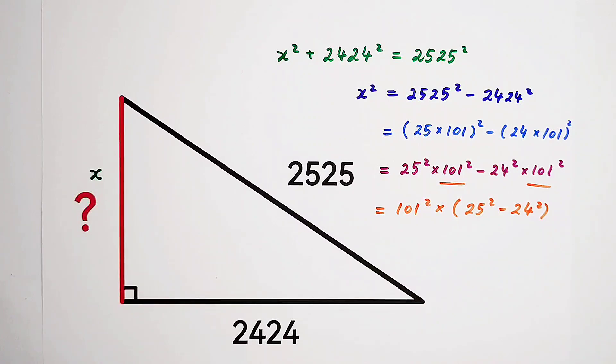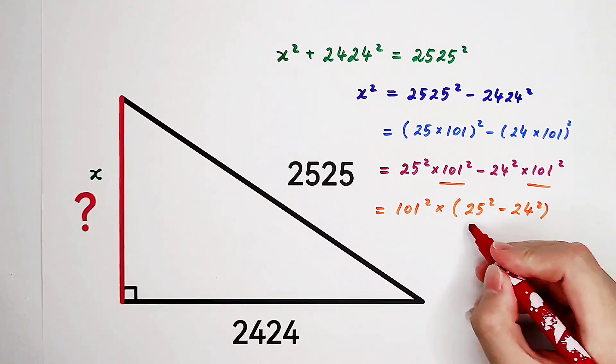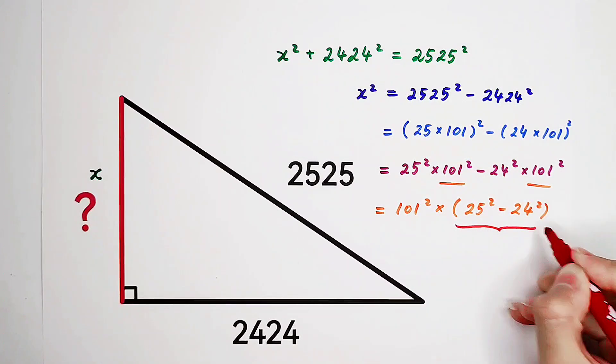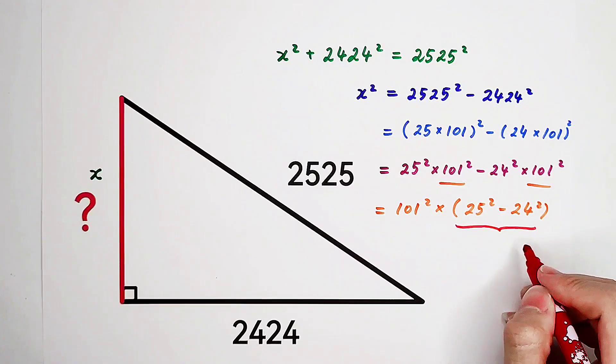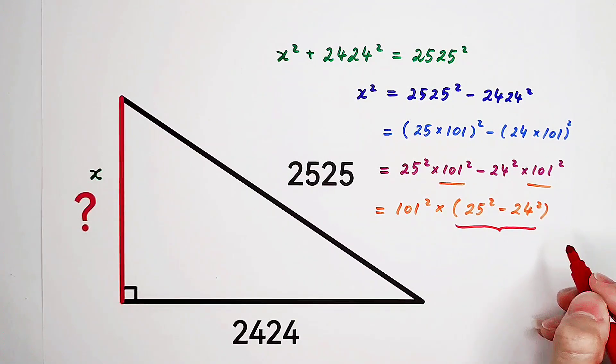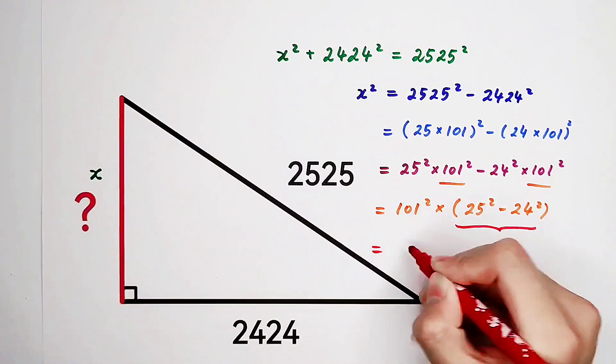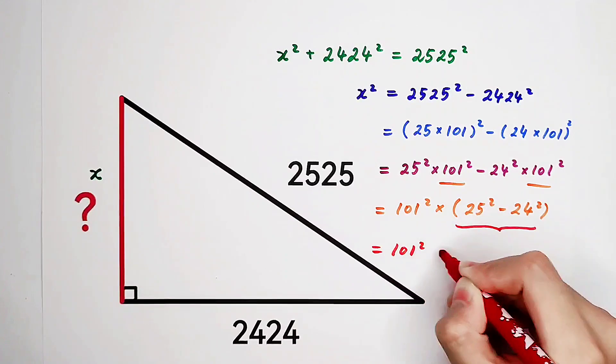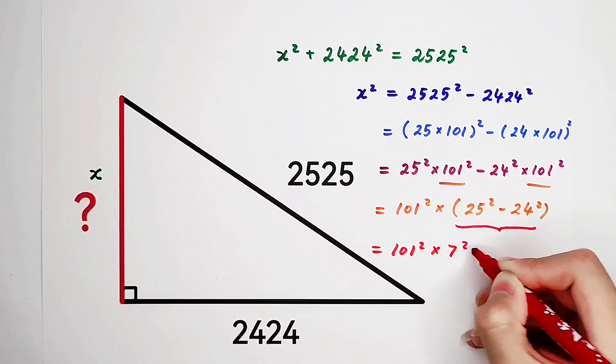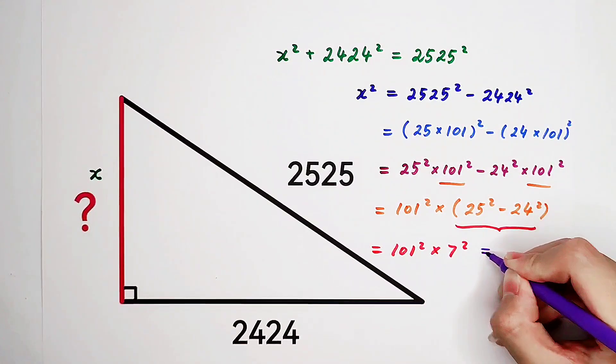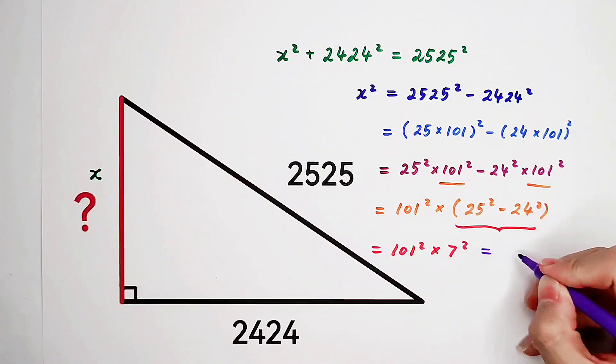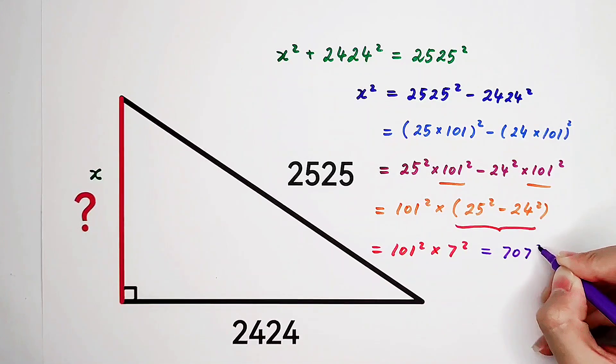And this, hopefully you know it, 25 squared minus 24 squared is 7 squared. So this one is 101 squared times 7 squared. And it is, of course, 7 times 101 is 707 squared.